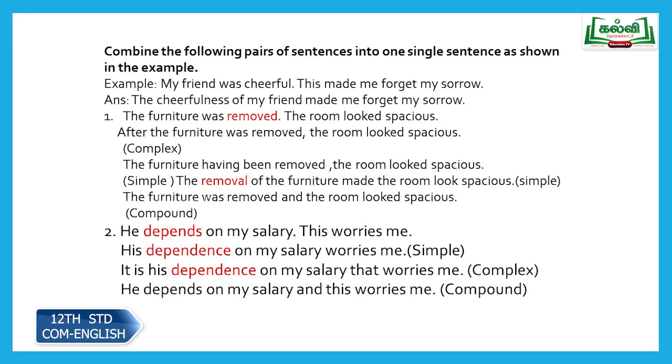Now, combine the following pairs of sentences into one single sentence as shown in the example. This is simple, complex, and compound transformation. You have two independent sentences and you are going to combine them into one. Your answer could be in the form of a simple, complex, or compound sentence — whichever comes to your mind. I have given you all three forms for every pair of sentences, so you could practice and choose anything that is easy for you.